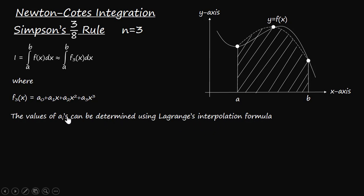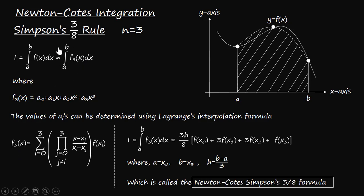Now applying Lagrange's interpolation formula we can determine the value of a_0, a_1, a_2, and a_3 to find the function expression for this f_3(x). Now if we substitute this third order polynomial function into this integral and we integrate it with respect to x, we will get 3h upon 8 multiplied with the expression which is f(x_0) plus 3 times f(x_1) plus 3 times f(x_2) plus f(x_3).